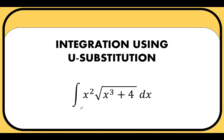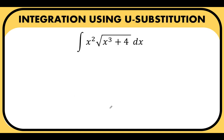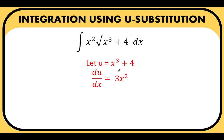Let's go to problem number two: find the antiderivative of x squared times the square root of (x cubed plus 4) dx. This looks like a complicated function to integrate because of the radical sign. Using u-substitution, we let u equal x cubed plus 4, because the derivative of u with respect to x is 3x squared, which is almost similar to one of the factors in the integrand. Treating du over dx as a fraction, we multiply both sides by dx to arrive at du equals 3x squared dx.